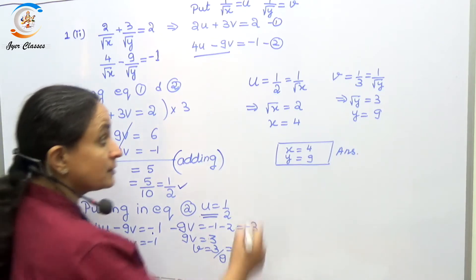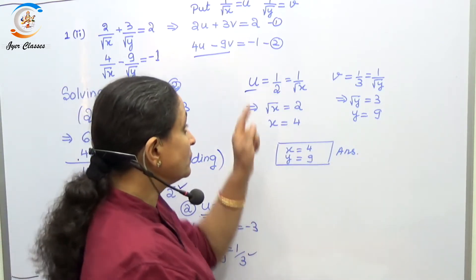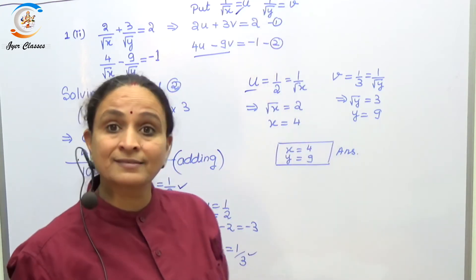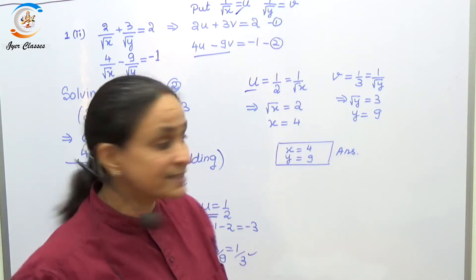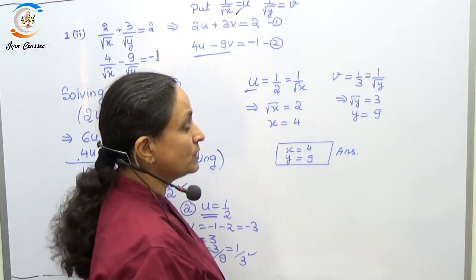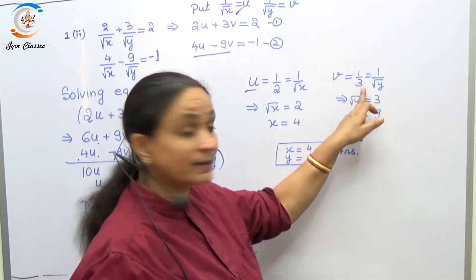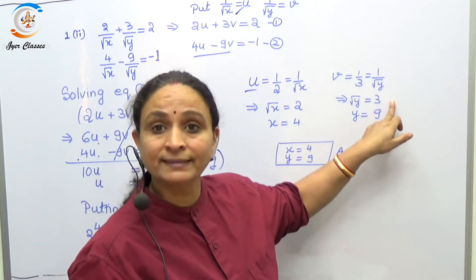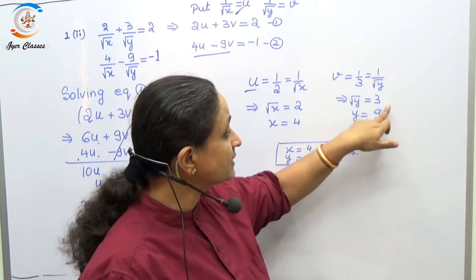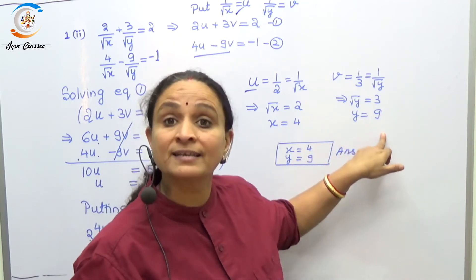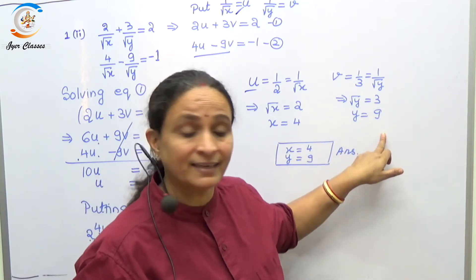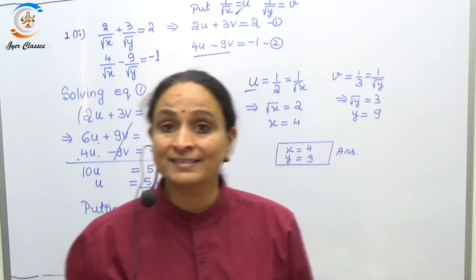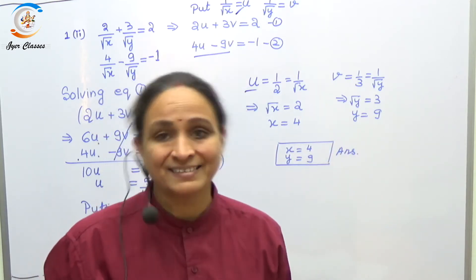Since u = 1/√x = 1/2, we have √x = 2 so x = 4. Since v = 1/√y = 1/3, we have √y = 3 so y = 9. Final answer: x = 4 and y = 9.